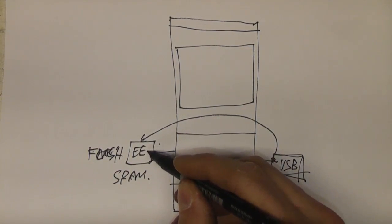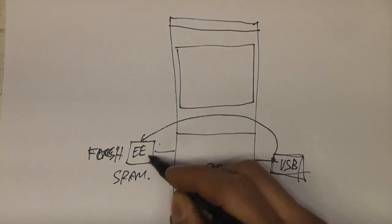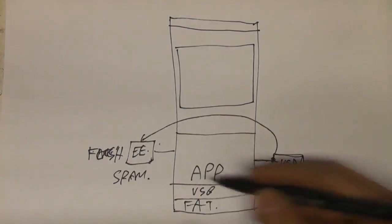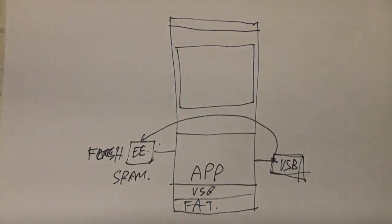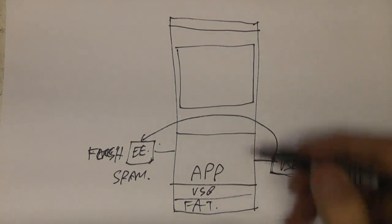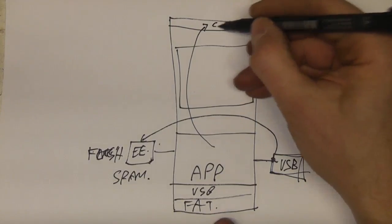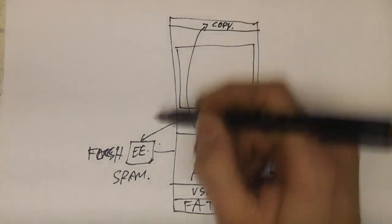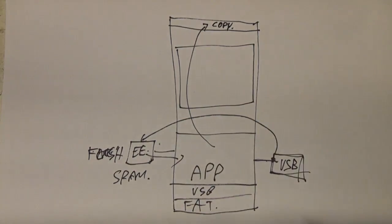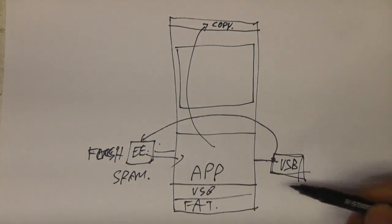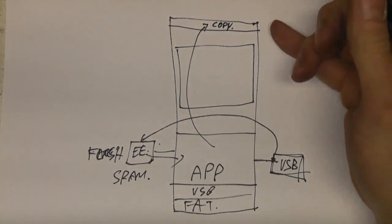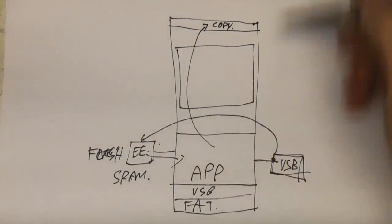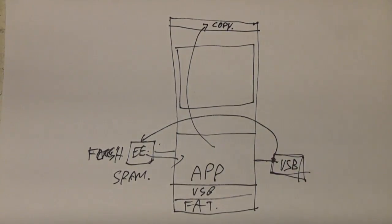Once it's made a copy of the new application code somewhere safe, the key is that this area is really simple and easy to access. You need very little code to take this image and copy it into the application area. This copy routine — let's call it the 'copy code' rather than a bootloader — only needs to copy data from the external memory into the application area. I've implemented this down to about 32 words in one extreme example. All it needs to know is where the code is and how big it is, and it can make the copy, reset the device, and you're running with new firmware.